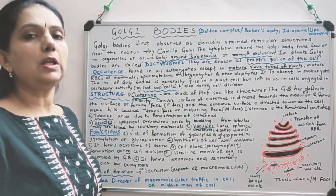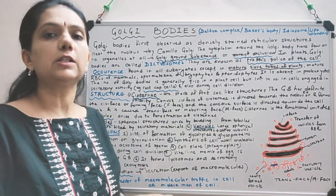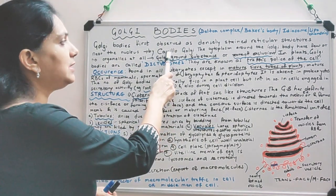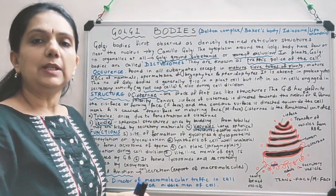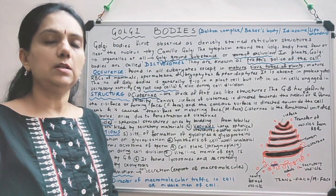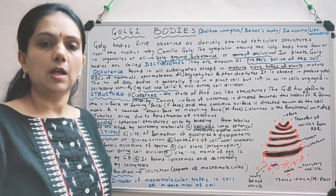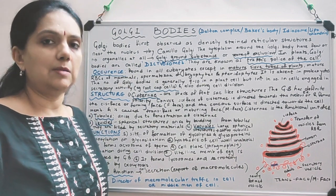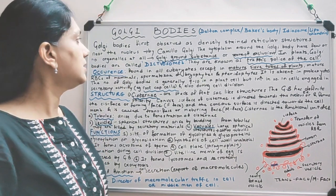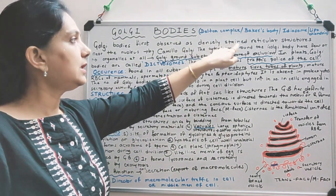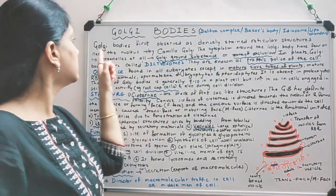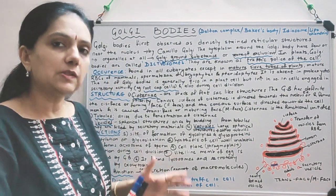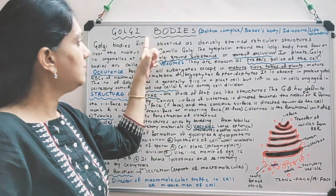Golgi body is actually named after the discoverer of this cell organelle. The discoverer was Camilo Golgi. Camilo Golgi was studying nerve cells in owls and cats, and at that time during the staining techniques, he observed densely stained reticular structures near the nucleus and he called them Golgi bodies.